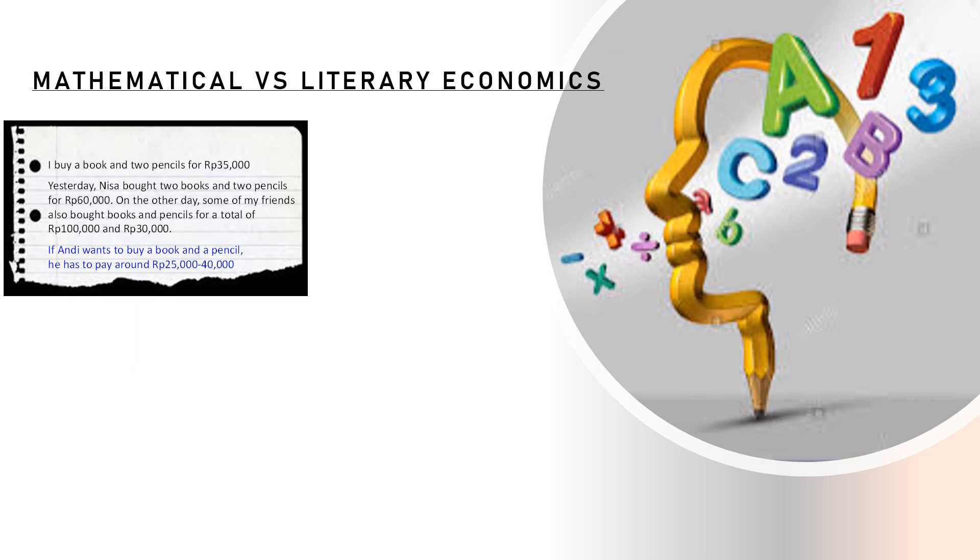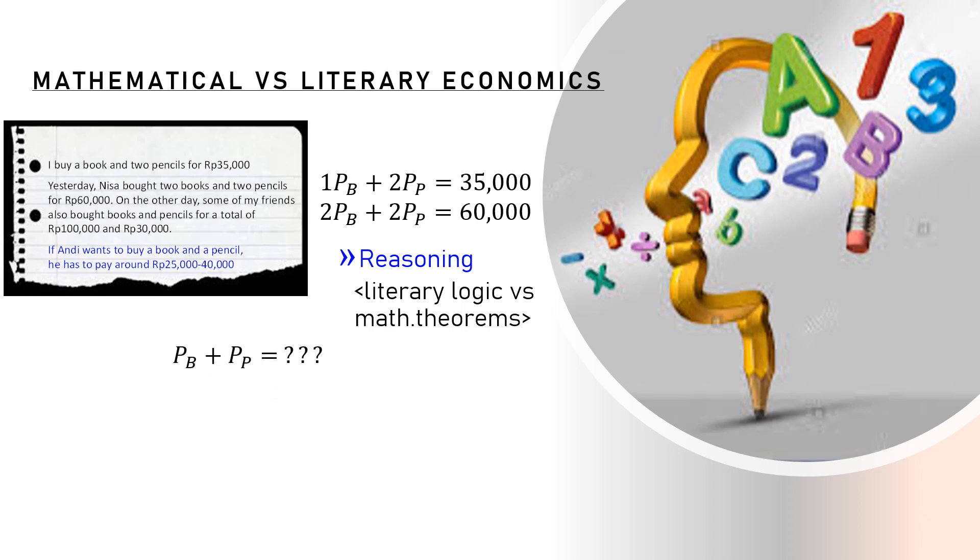In math, the similar problem is stated using some symbols. And once the relevant assumption or information is obtained, it is stated explicitly. As we can see here, we have two relevant informations and are stated clearly like this. With symbols PB and PP in replacement of price of book and pencil respectively, the statements now look more concise, precise, and more organized as well. It also allows us to use mathematical logic or reasoning, the if-then process to find the conclusion. Given the information, the problem is to find how much they should pay to buy a book and a pencil. Mathematically, the problem is stated like this. Using mathematical theorems, we can find a more precise and accurate answer. MD should pay 30,000 rupiah.